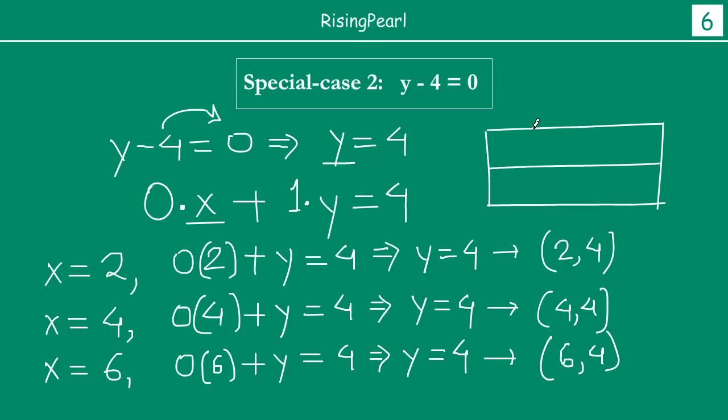Now dosto, if we write this in table form, x and y. And we have found 3 solutions. So let us make it into 3 rows. So x is 2, y is 4. X is 4, y is 4. X is 6, y is 4.